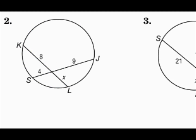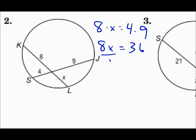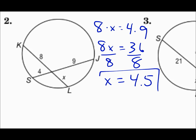For question 2, same type of problem. Chord KL is broken into pieces 8 and X. Chord SJ is broken into 4 and 9. Multiply those pieces: 8 times X equals 4 times 9, so 8X = 36. Divide both sides by 8, and X is 4.5.